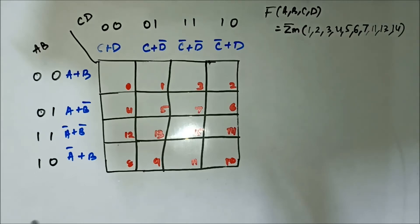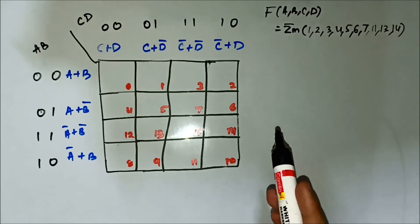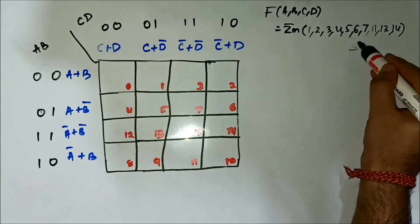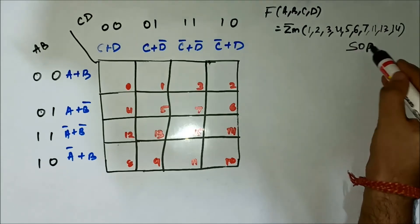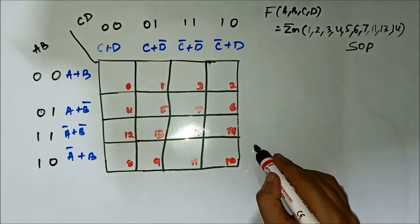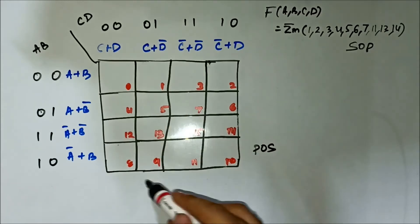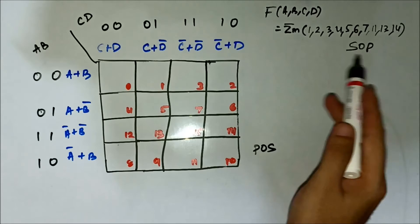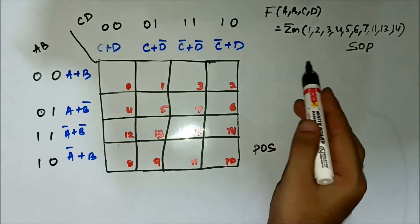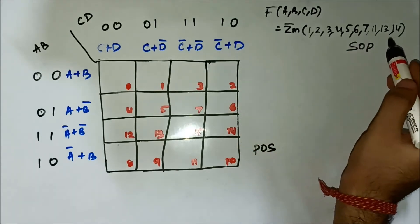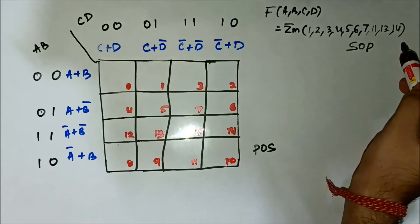This is the 7th question related to implementation of SOP expression using POS KMAP. Here we have the minterm values given: 1, 2, 3, 4, 5, 6, 7, 11, 13, 14.